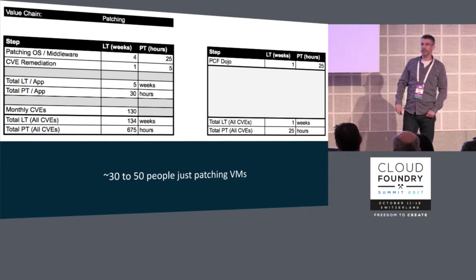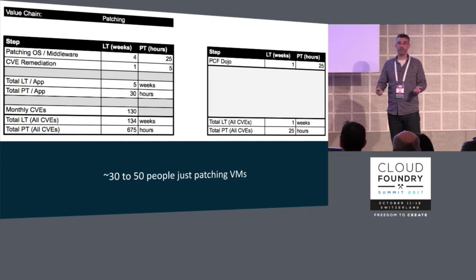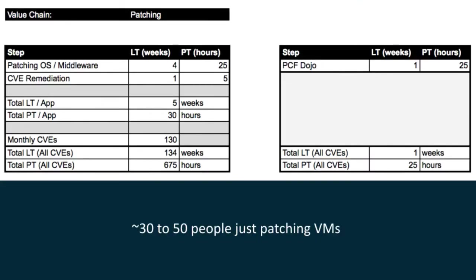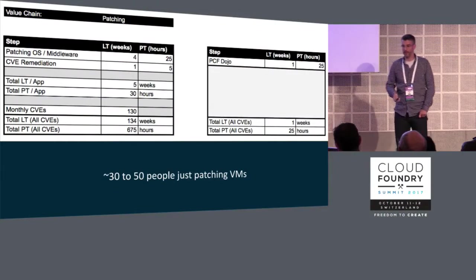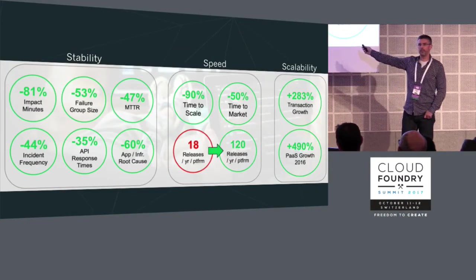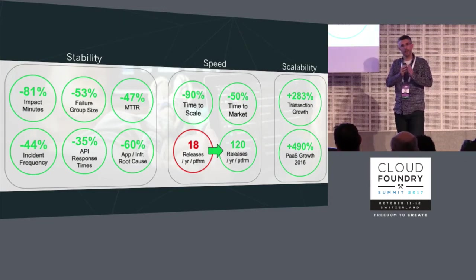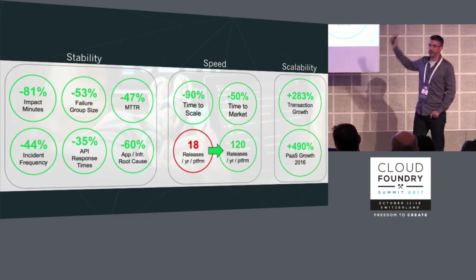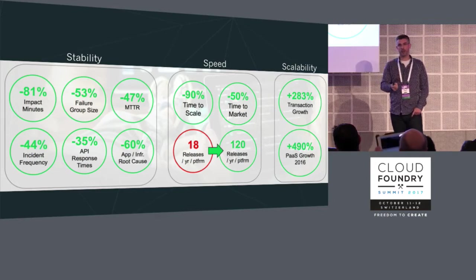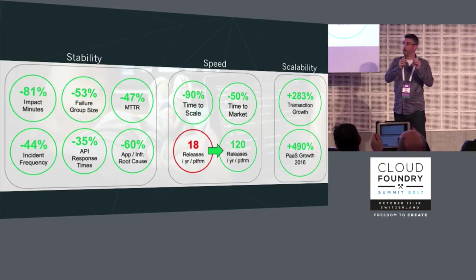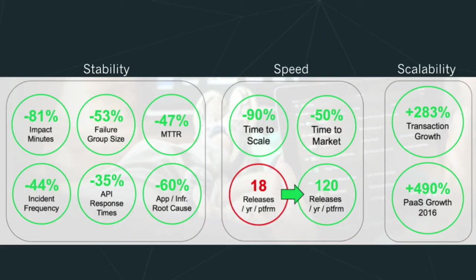At the other end of the spectrum: patching. In a typical environment you might have 130 CVEs per month. For one particular company I worked with, it was five hours per CVE to roll out across their organization — given to an operator with an Excel spreadsheet, running scripts that failed and raising support tickets. Very time-consuming and painful. Coupled with BOSH, the release engineering toolchain can now dynamically roll out new stemcells with a rolling upgrade. When you look at these value streams on aggregate, you see fantastic results — something like 283% transaction growth and 50% reduction in time to market.